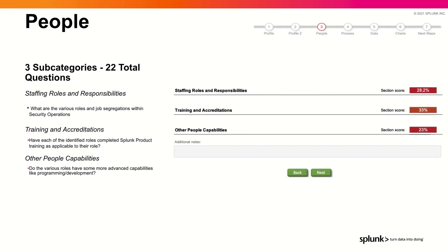Then we'll talk about people. There are about three subcategories and 22 total questions where we really focus on staffing, roles and responsibilities, the training and accreditation needed for these roles in terms of Splunk, and then some additional people capabilities as well.